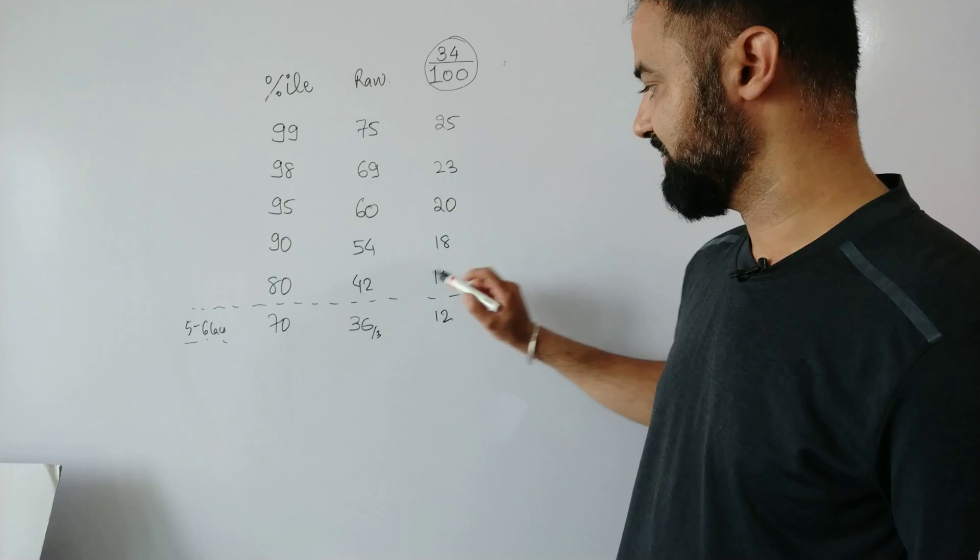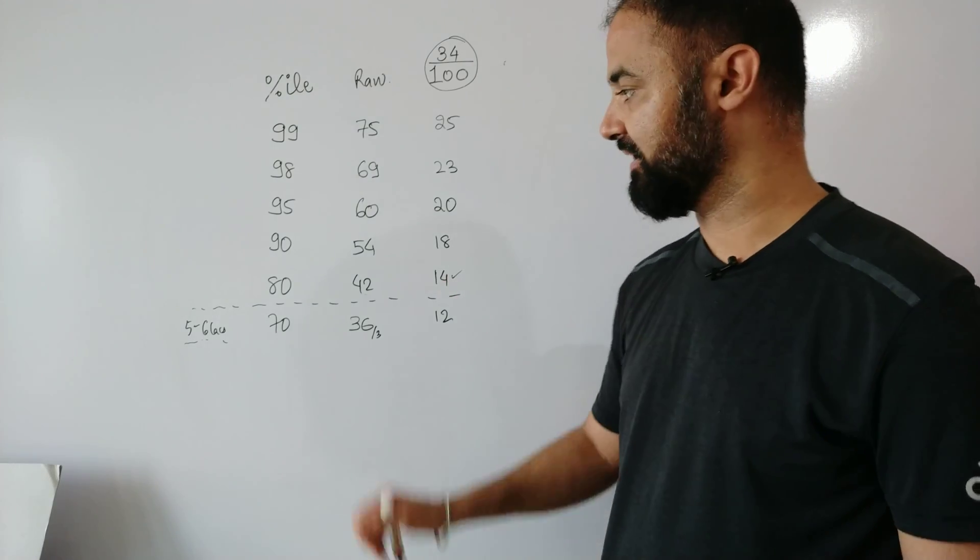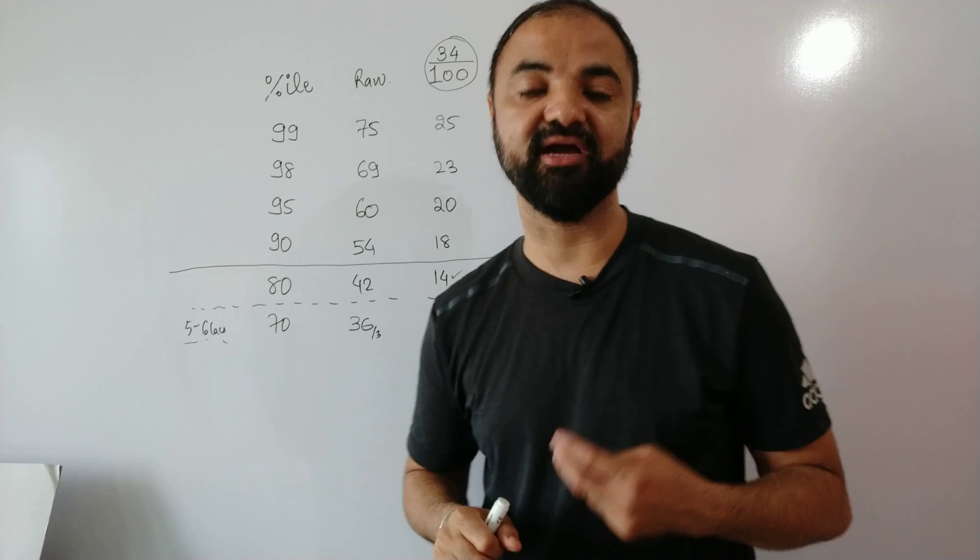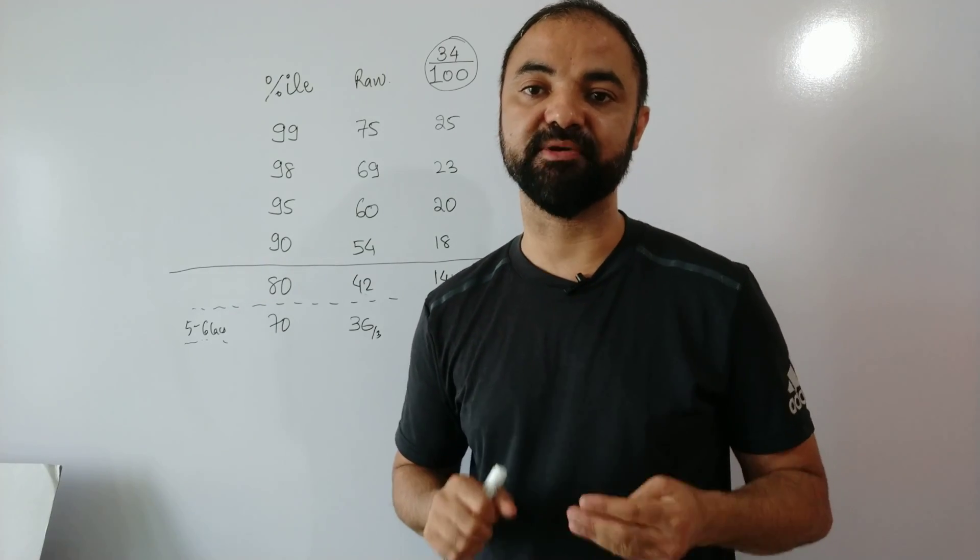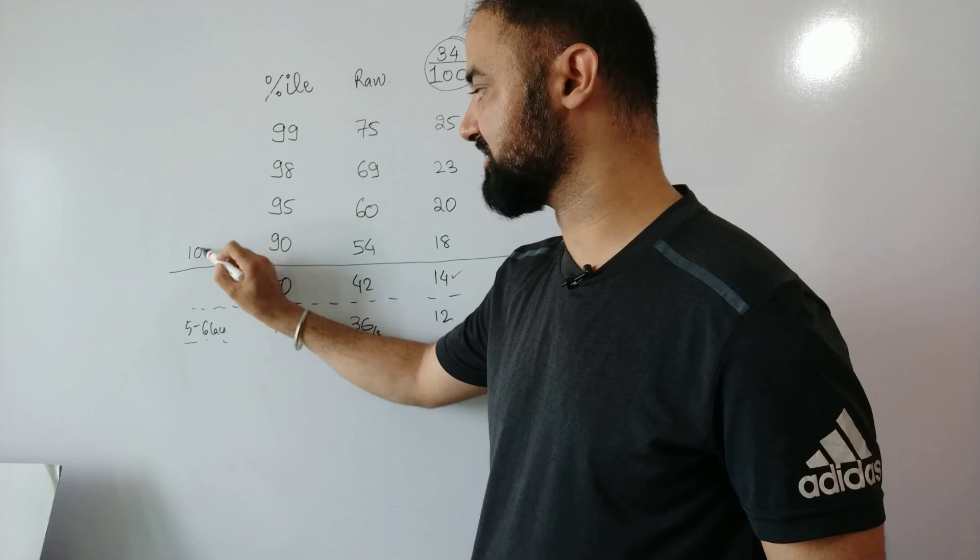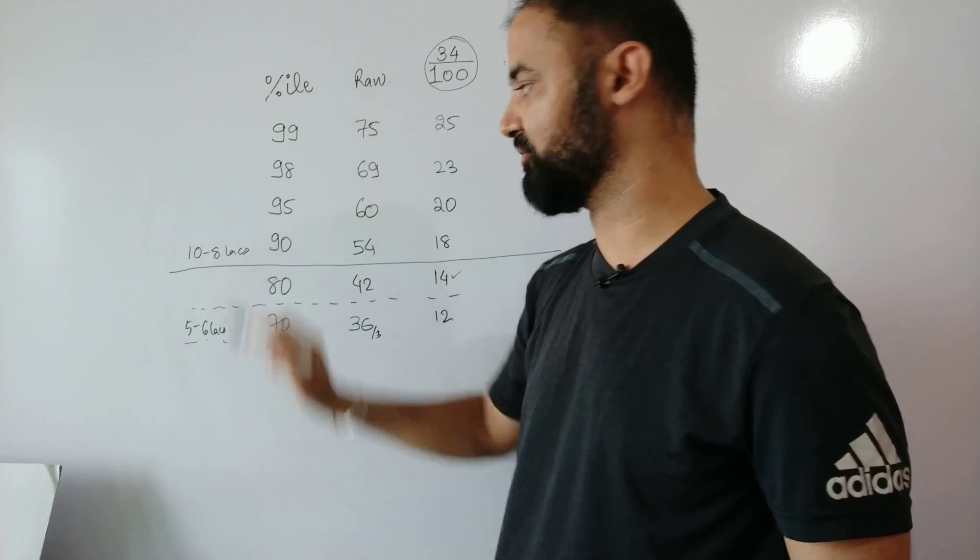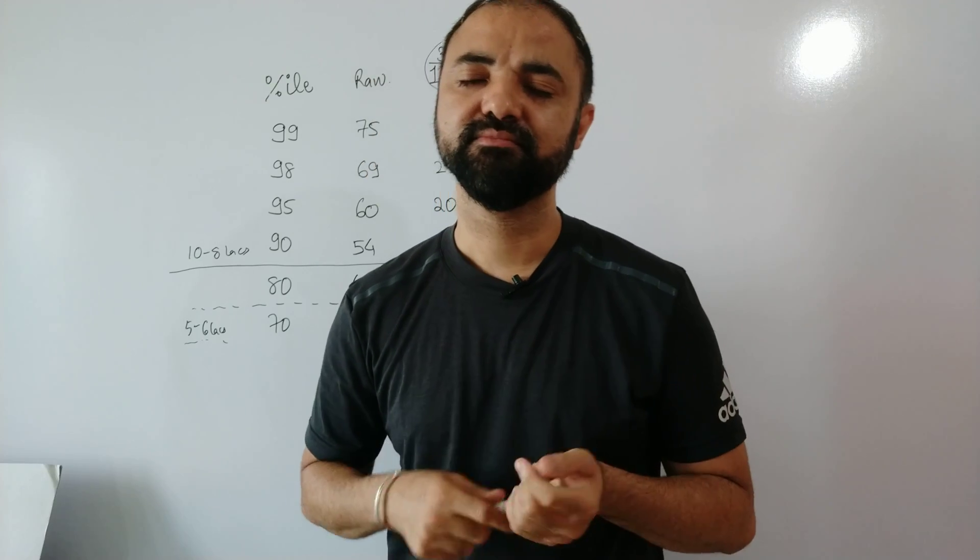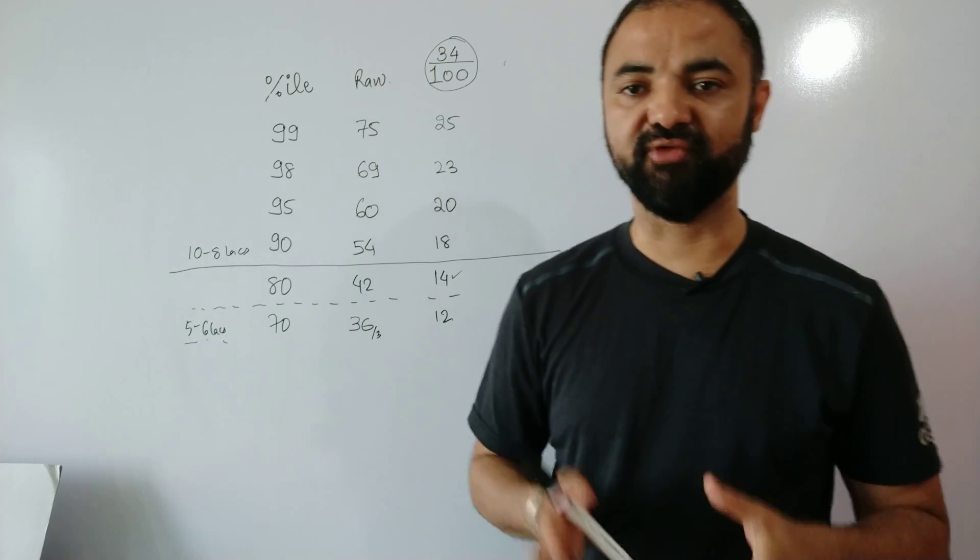Main action starts at 90 percentile. This is where I consider to be a good score. Get me 90 percentile, you are getting a good college. 90 percentile average salary will touch around 8 to 10 lakhs.